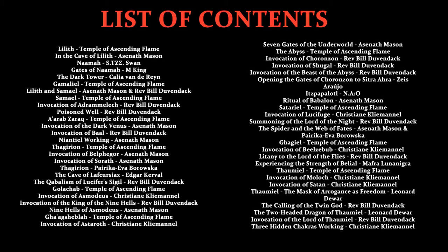Continuing the contents: Invocation of Shugal, Invocation of the Beast of the Abyss, Opening the Gates of Choronzon, Citadel of Ara, Qliphoth Ritual of Babylon, Satariel, Invocation of Lucifuge, Summoning of the Lord of the Night, The Spider and the Web of Fates, Gaghiel, Invocation of Beelzebub, Litany to the Lord of the Flies, Experiencing the Strength of Belial, Thaumiel, Invocation of Moloch, Invocation of Satan, Thaumiel — The Mask of Arrogance's Freedom, The Calling of the Twin God, The Two-Headed Dragon of Thaumiel, Invocation of the Lord of Thaumiel, and Three Hidden Chakras working.